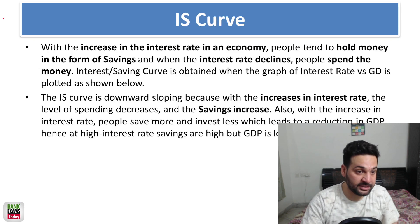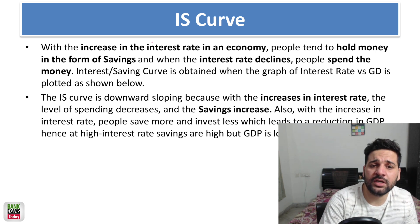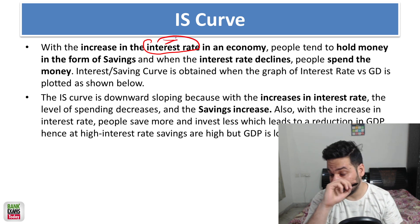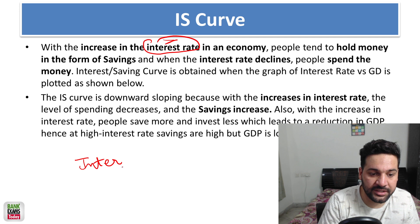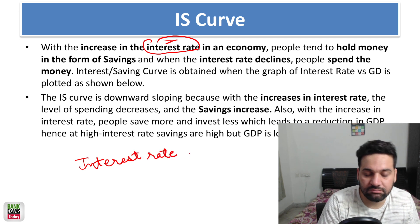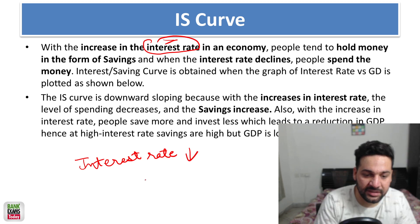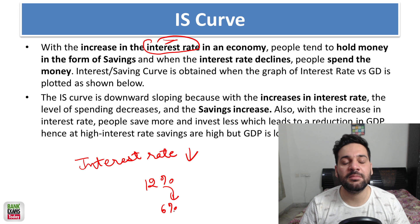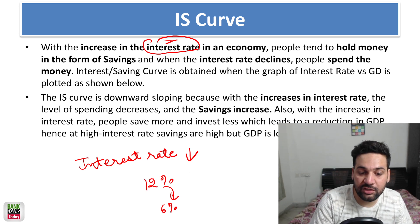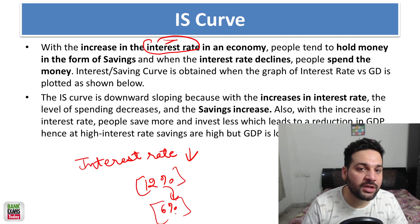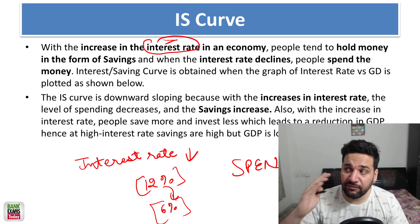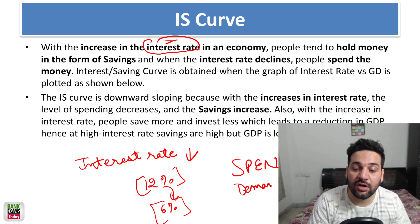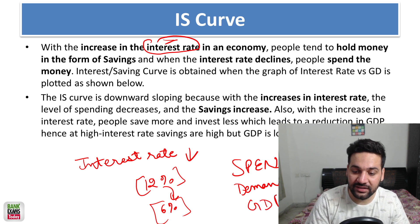Let's start with the IS curve. What is the effect of interest rate in the economy? If the interest rate decreases — let's say it was 12 percent and now it is 6 percent — what would you do? There is less motivation to save money in FDs or savings bank accounts. Previously you were getting 12 percent interest, now you're getting 6 percent, so there is no motivation to save. You will spend that money instead.